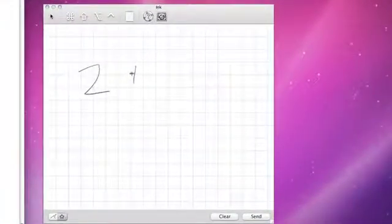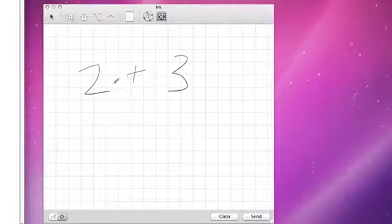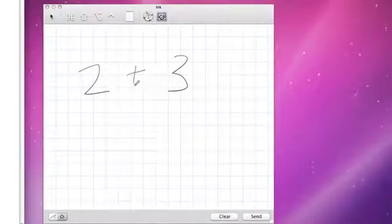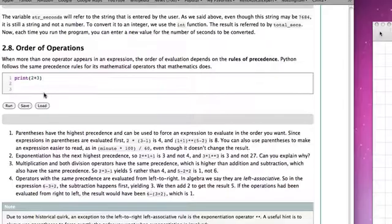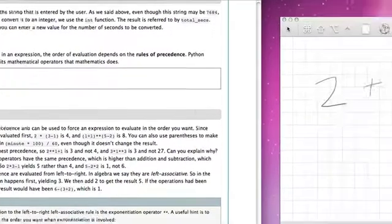If we have an expression like 2 plus 3, it's pretty easy for us to think about what's going to be done. Python is simply going to take the data value 2 and the data value 3 and add them together. When we look at this in our active code window, we can see that if we print the result of evaluating the expression 2 plus 3, when we run this we get the value 5.